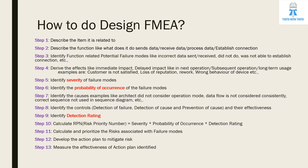Now, how do we do design FMEA? Design FMEA is somewhat similar to process FMEA. The difference is that the first step is to trace the item — either by mentioning the item description or item ID for traceability. Step two is to describe the function — what the particular design element, unit, or component will do. Design FMEA can be applicable for system design, mechanical design, hardware design, software design, architecture design, and unit design. The function describes whether it sends data, receives data, processes data, or establishes a connection.